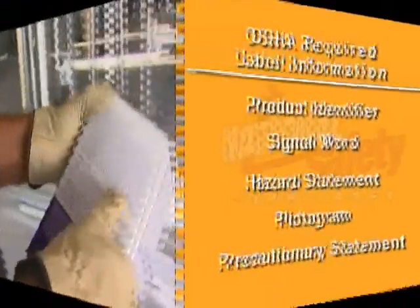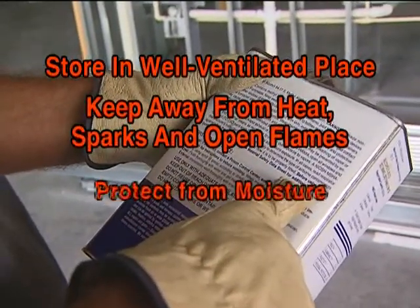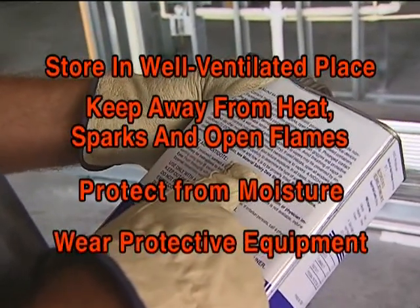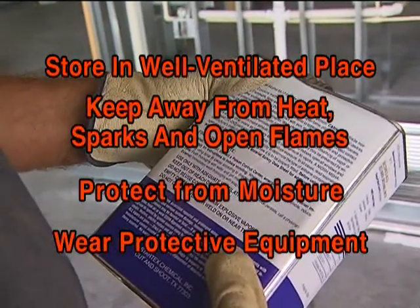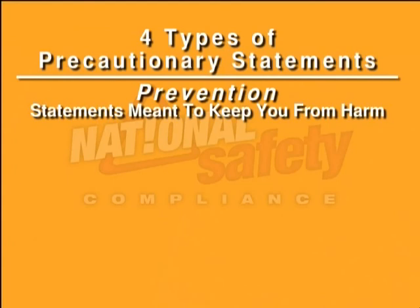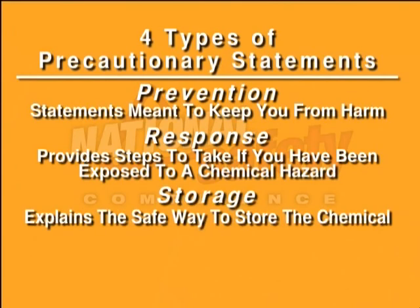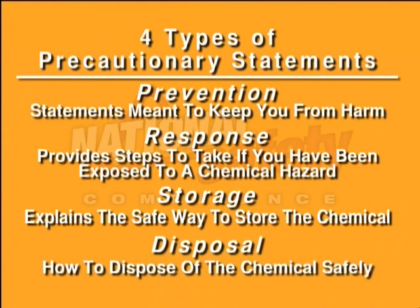Precautionary Statement — a phrase describing recommended measures to be taken to minimize or prevent adverse effects resulting from exposure to the hazardous chemical or improper storage or handling. There are four types of precautionary statements used on labels: Prevention — statements meant to keep you from harm; Response — statements providing steps to take if you have been exposed to a chemical hazard; Storage — explains the safe way to store the chemical; and Disposal — explains to the employer and employee how to dispose of the chemical safely.